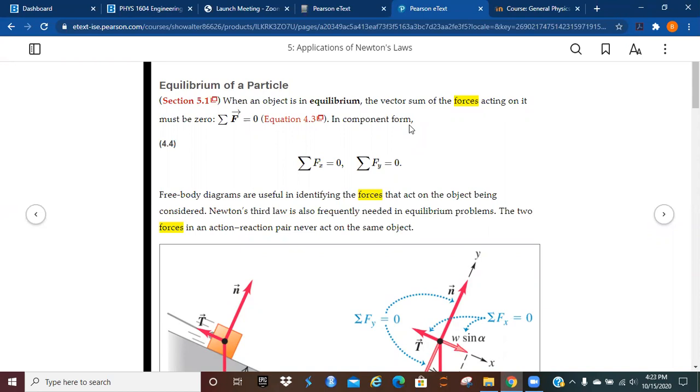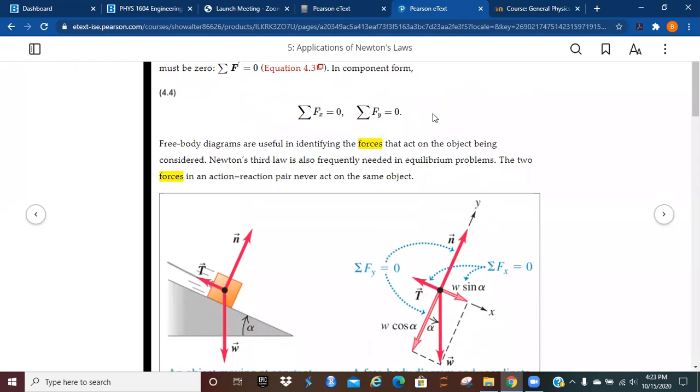When a particle or an object is in equilibrium, the vector sum of the forces acting on it must be zero. If you look at those forces in component form, the forces in the x direction and the forces in the y direction all must be equal to zero.